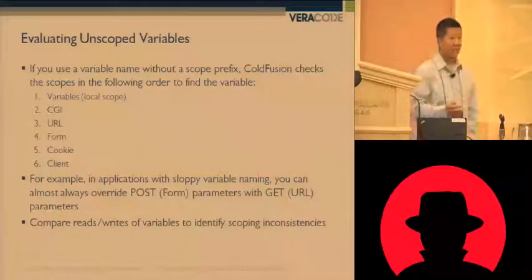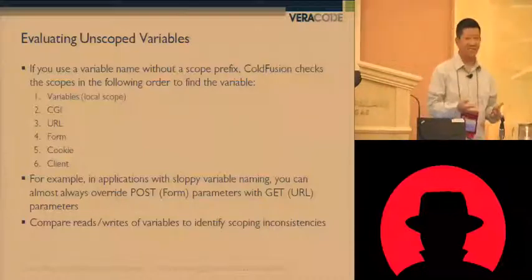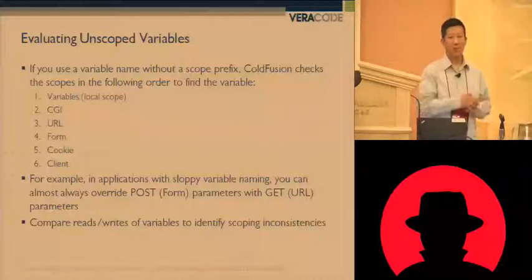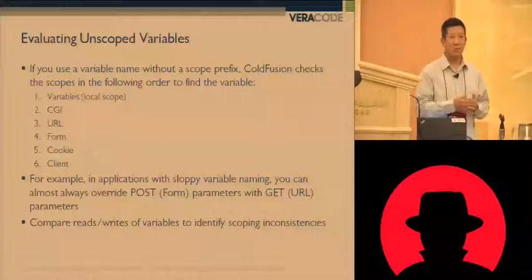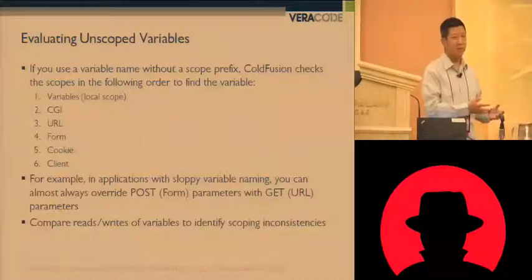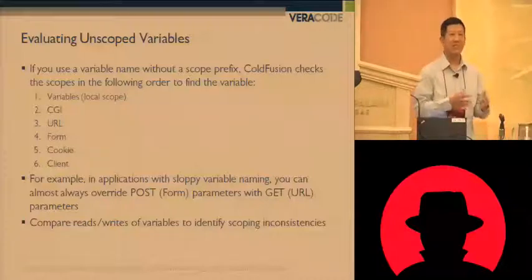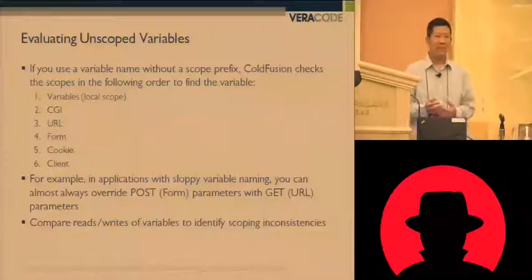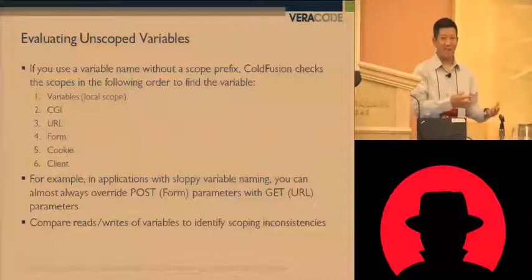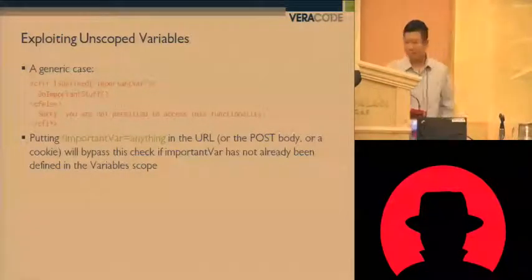If you're developing or reviewing an application, look for any scoping inconsistencies — any case where unscoped variables are used, but more importantly any mismatch between places where scoping is used versus not used. So if they write a variable using a scope and then read that same variable later without a scope, that's a potential attack point, because they're making an assumption at the point of the read that it's going to read only the variable they set. In reality, it may actually be reading a different user-controlled variable.